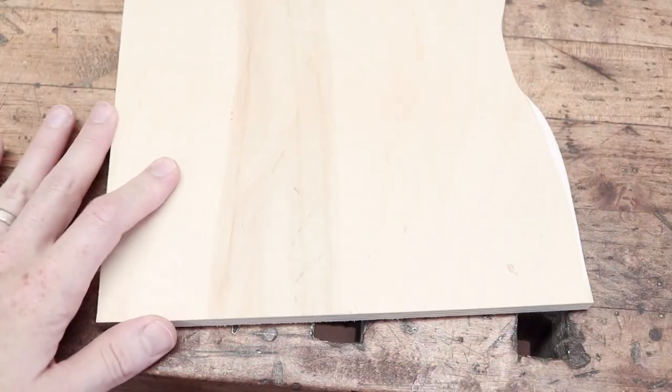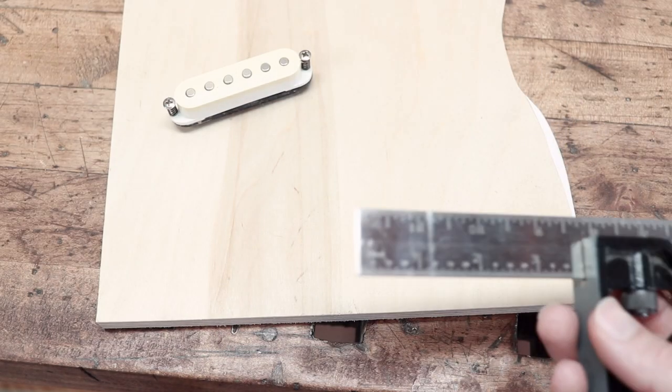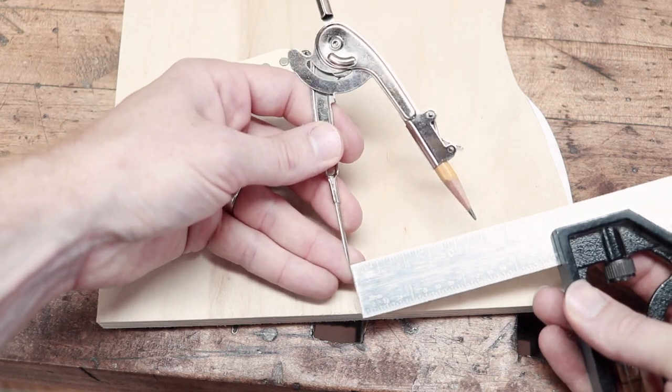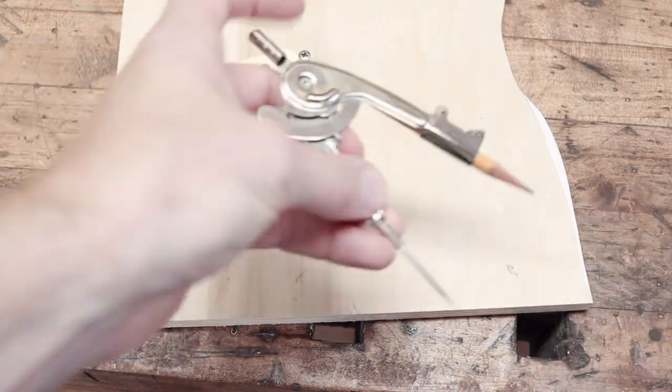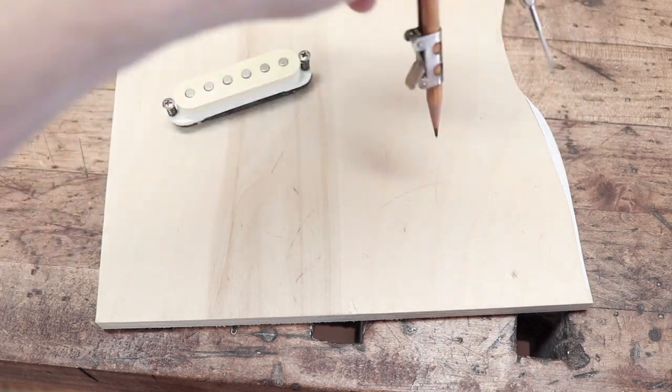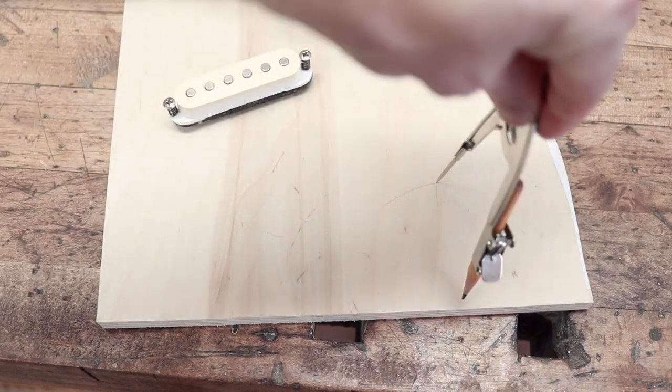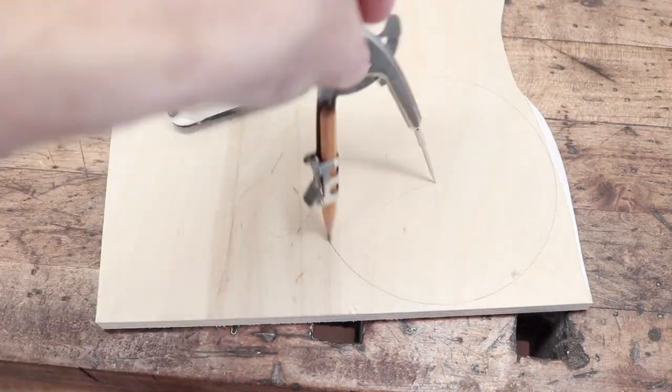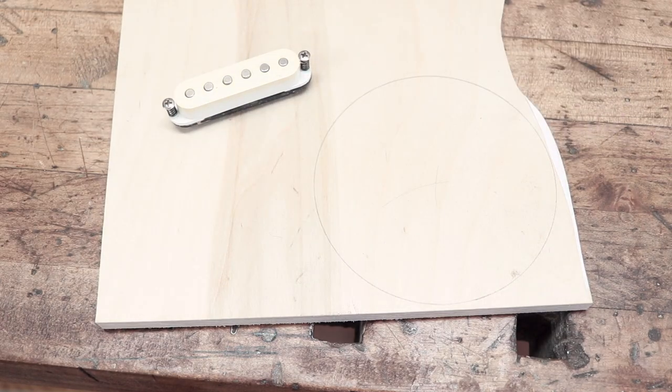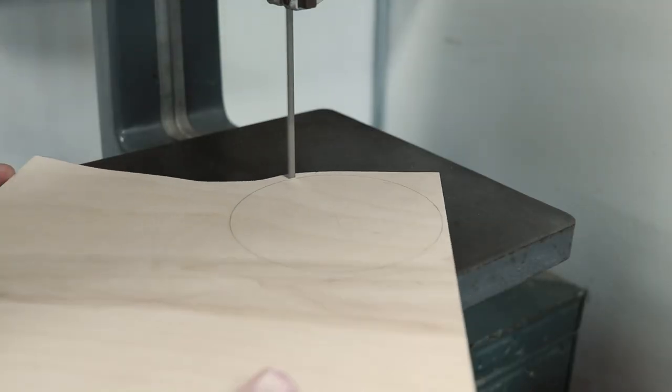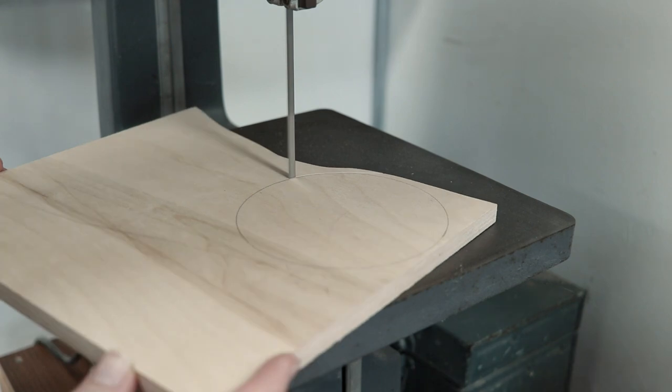Okay, so the first thing that I did was found this scrap of half inch thick Baltic birch plywood. And this is going to be a disc that I can mount the pickup to. So with a spare pickup that I had laying around, I found that a pretty good size was a five inch diameter circle. So I could set my compass to two and a half inches, draw out the circle, cut it out on the bandsaw and then clean up that cut on the disc sander.